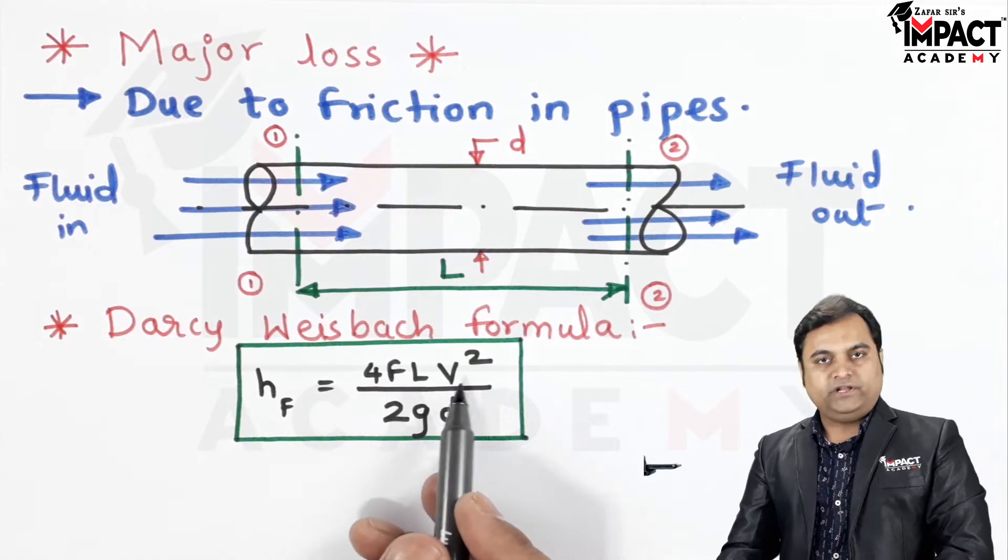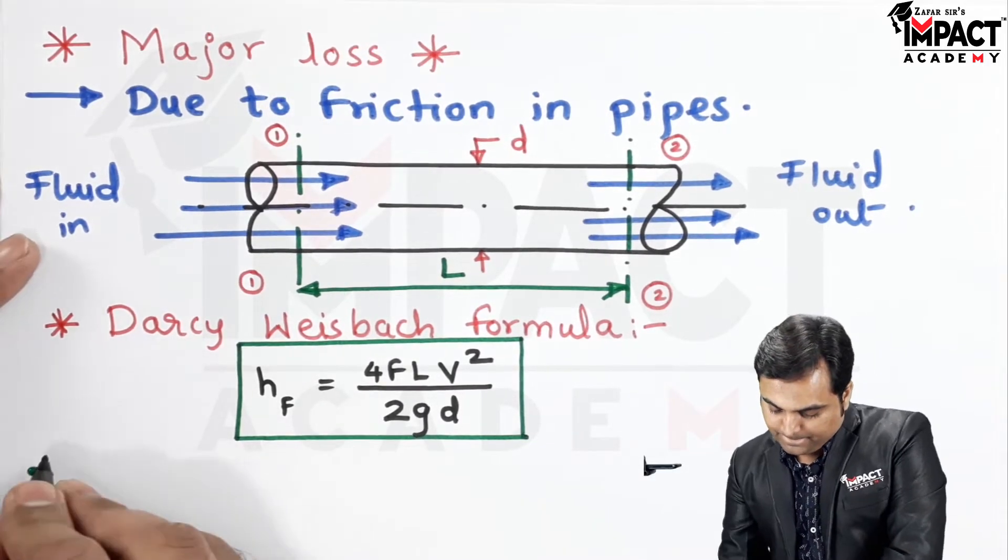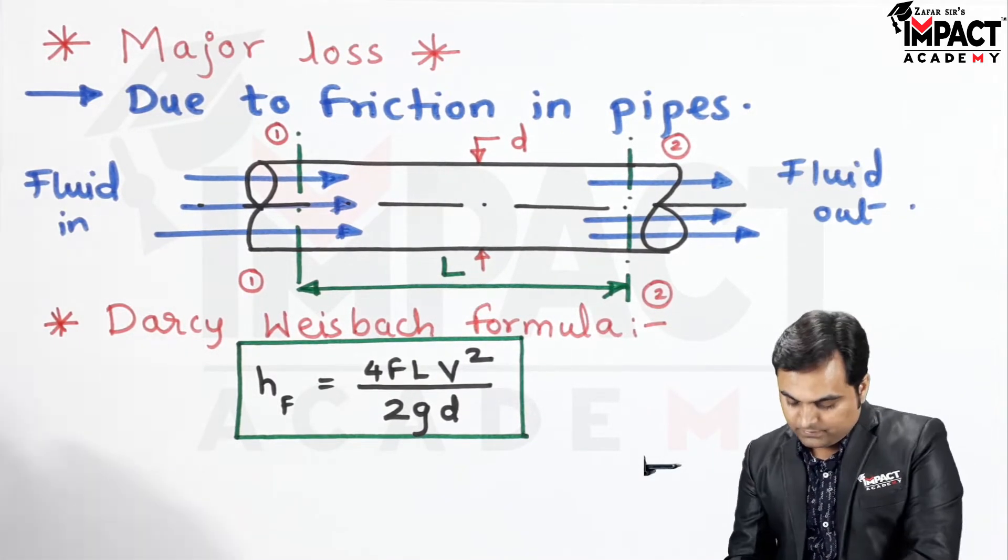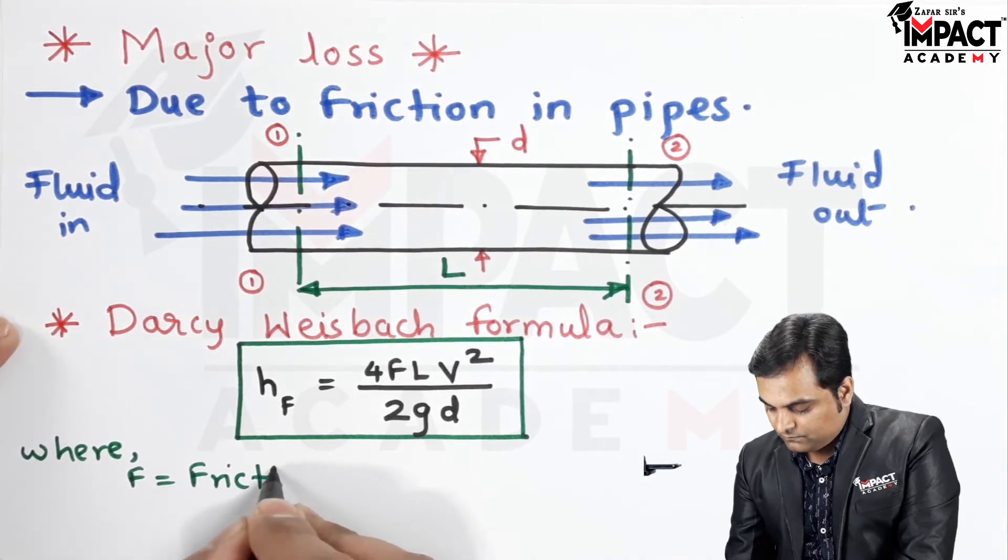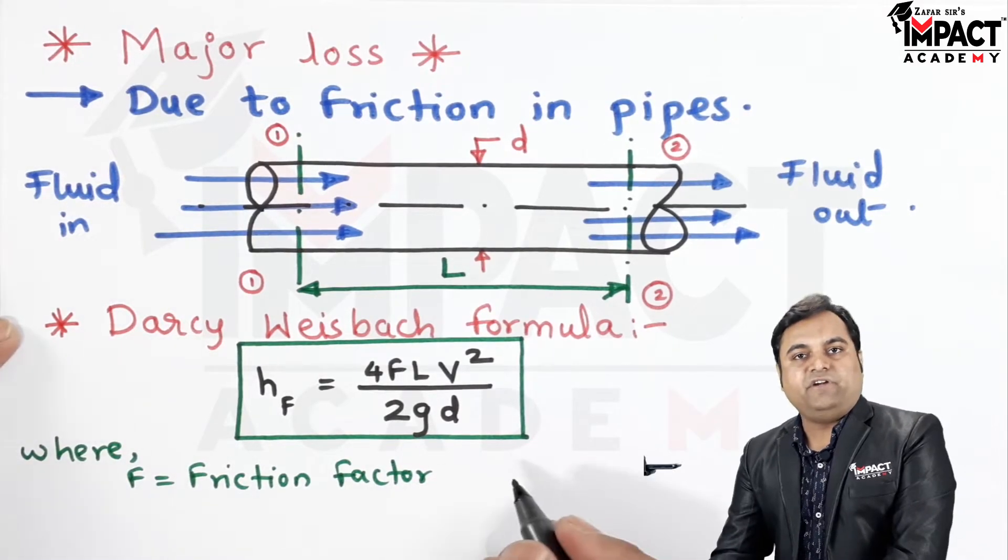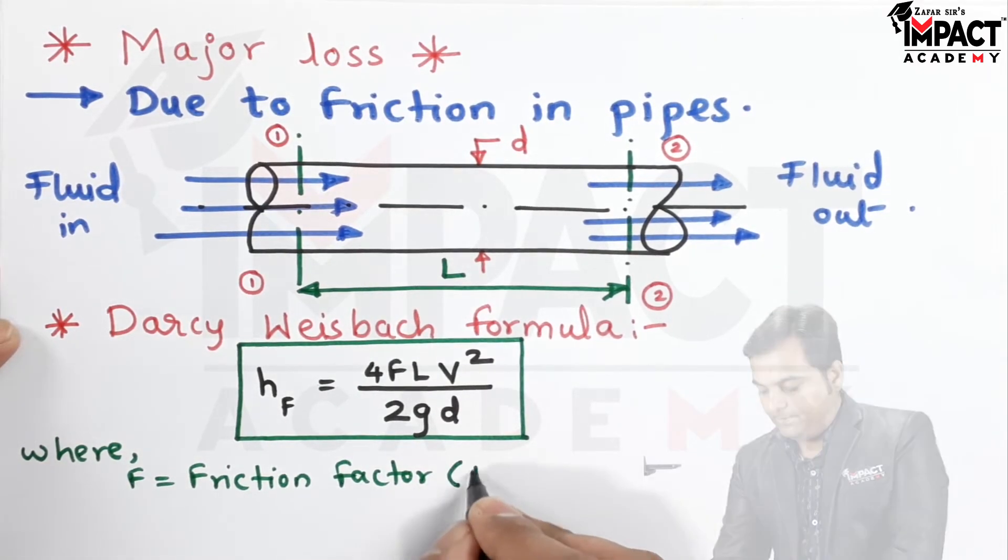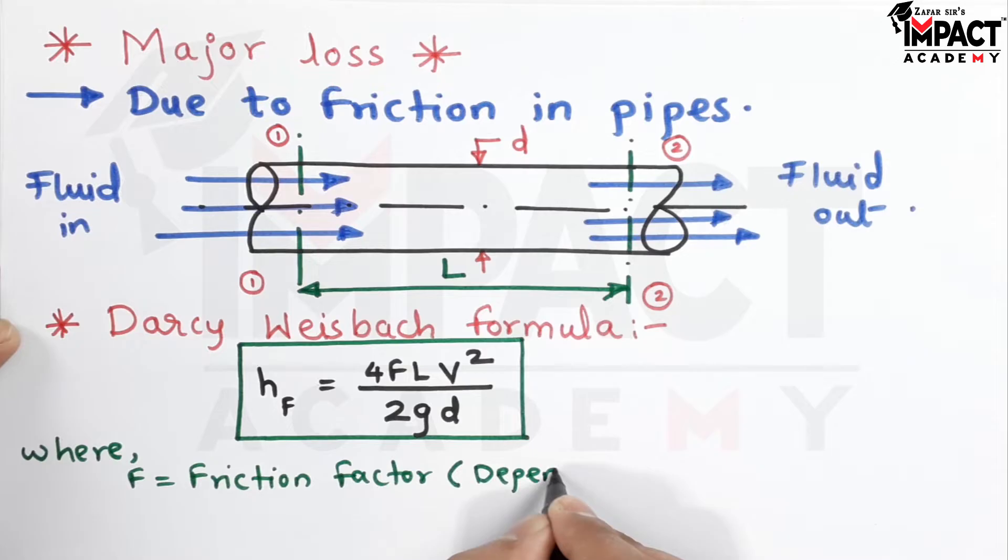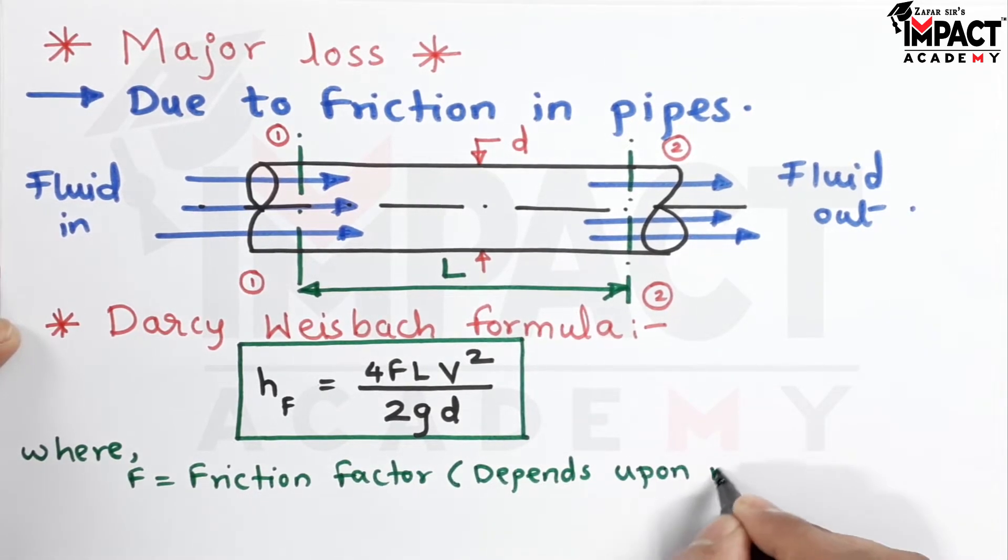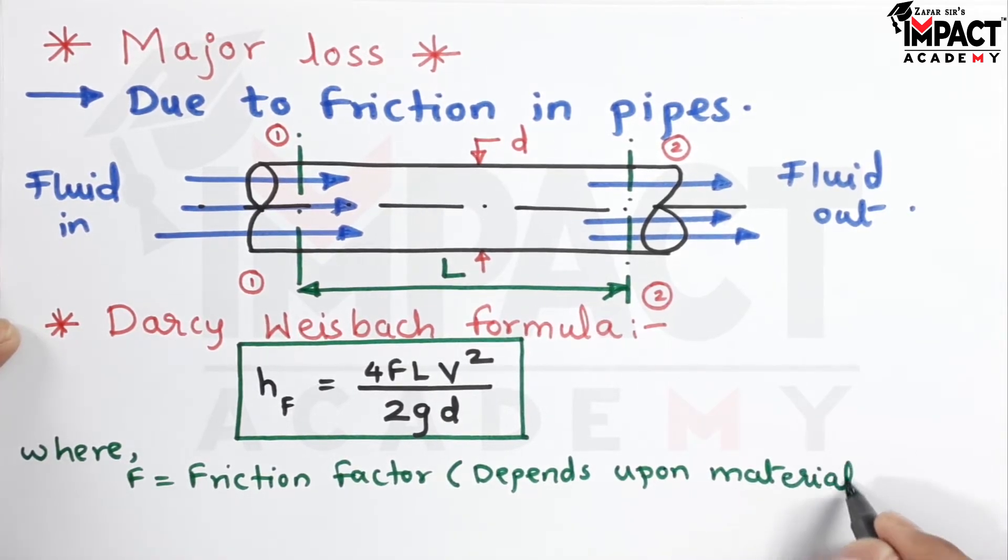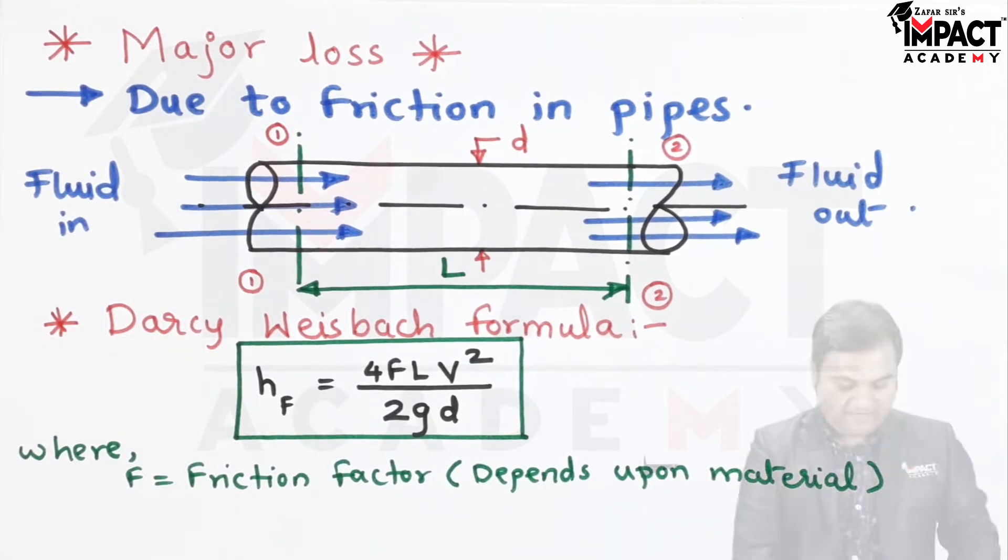It is HF which is called as the head loss due to friction: 4FLV squared over 2gd, where F is the friction factor which depends upon the material of the pipe.